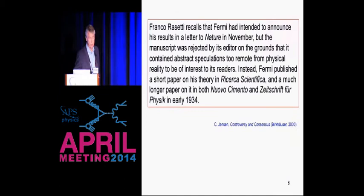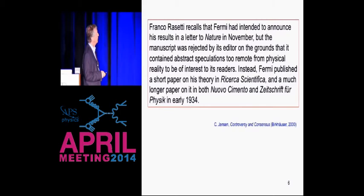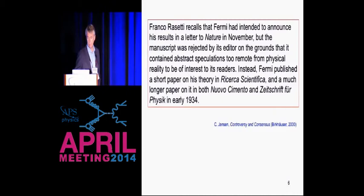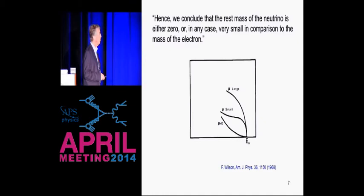Fermi wrote up his work and had intended to announce the results in a letter to Nature in November of 1933, but the manuscript was rejected by its editor on the grounds that it contained abstract speculations too remote from physical reality to be of interest to its readers. Nature was a tough journal. So instead he sent it off to a small Italian journal, and a longer paper to Nuovo Cimento and Zeitschrift für Physik. The consequence was that the paper was not available in English until about 1968.